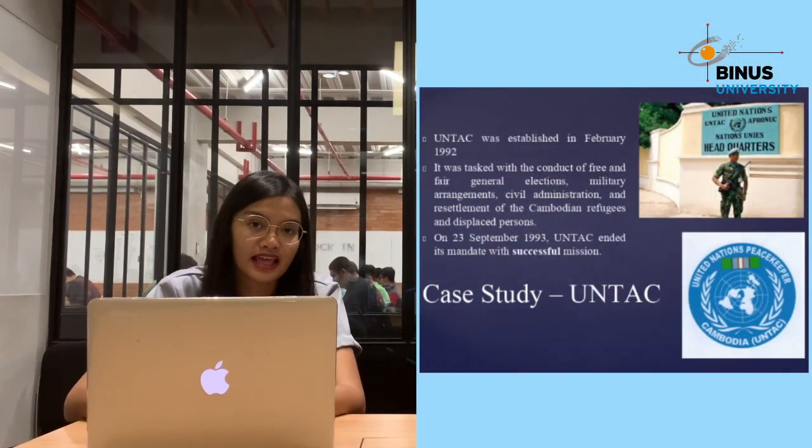Now let's move on to the case study showing the success of UN peacekeeping operations through UNTAC in Cambodia. In the years following the Second World War, Cambodia was torn apart by internal strife and the fallout of the Vietnam War, which culminated in the four-year reign of terror under Pol Pot. This resulted in many Cambodians losing their lives. Seeking resolution, the UN sought to end the conflict through several negotiations and conferences. Finally, in February 1992, UNTAC was established, tasked with conducting free and fair elections, military arrangements, and civil administration.